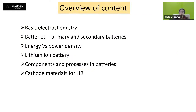So overview of the content: first we will cover a little bit of basic electrochemistry, then batteries — what are primary batteries, what are secondary batteries. Then we will discuss energy density and power density, two very common terms in energy storage materials. Then we will talk mostly about the workhorse of batteries, which is the lithium-ion battery — its components and processes — and we will cover a little bit about cathode materials for lithium-ion batteries.